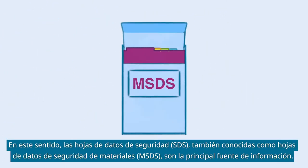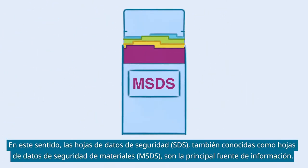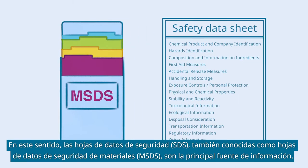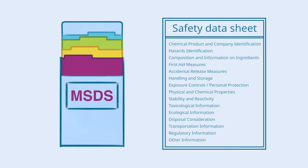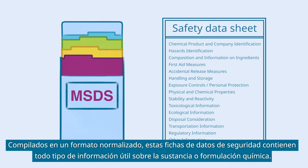In this regard, Safety Data Sheets, also known as Materials Safety Data Sheets, are the key source of information. Compiled in a standardized format, these Safety Data Sheets contain all kinds of helpful information about the chemical substance or formulation.